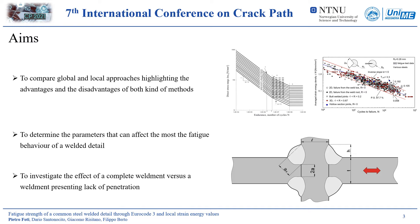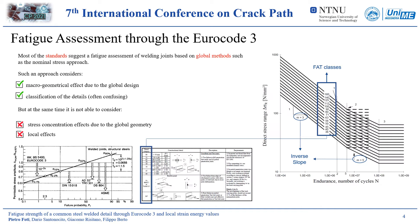One of the aims of this work is to compare global and local approaches, highlighting the advantages and disadvantages of their use. The second aim of this work was to perform a parametric study on the common cruciform joint to assess the effect of its main geometrical parameters, together with the effect determined by complete penetration of the weldment, which, as we will see, is not always required to ensure a failure from the weld toe.